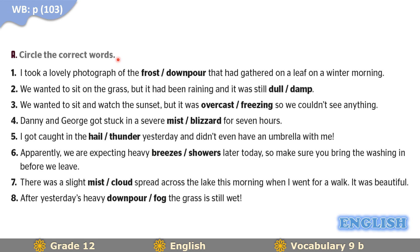Correction Task A: Sentence 1 — 'I took lovely photographs of the frost / downpour that had gathered on a leaf on a winter morning.' Answer: frost — a thin white layer of ice. Sentence 2 — 'We wanted to sit on the grass but it had been raining and it was still damp.' Answer: damp — the clue is 'it had been raining so it was still wet.' Sentence 3 — 'We wanted to sit and watch the sunset but it was overcast / freezing so we couldn't see anything.' Answer: overcast — full of clouds, that's why we couldn't see anything.